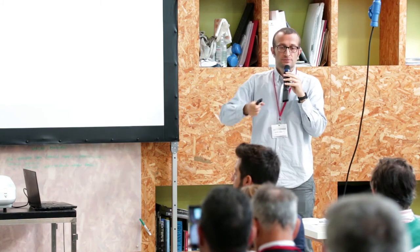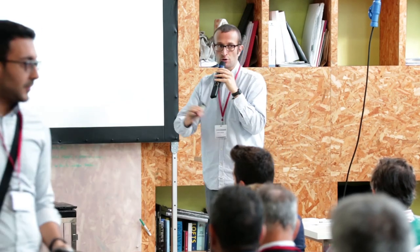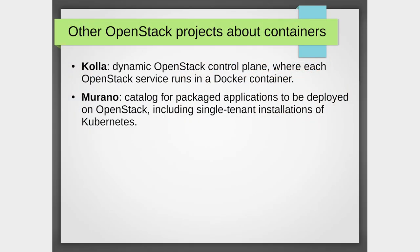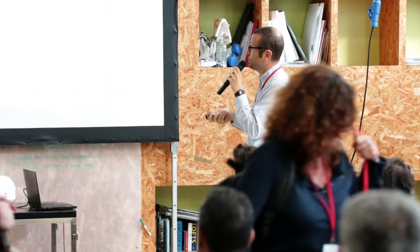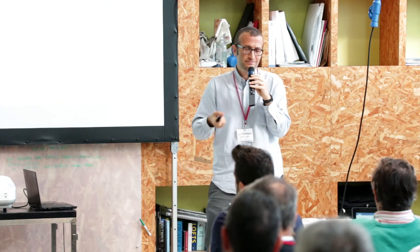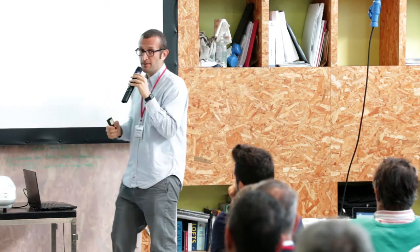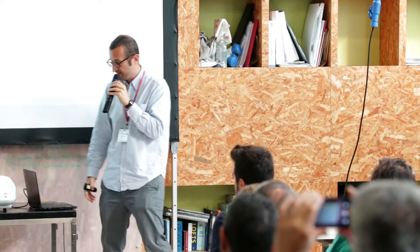There are other projects that deal with containers in OpenStack, though they are out of scope for us. Kolla, for example, allows you to deploy OpenStack so that the control plane is dynamically deployed with each OpenStack service running in a container — that's OpenStack on containers. And Murano is a catalog for packaged applications; among these applications there is Kubernetes as a single-tenant installation, but it's more interesting for other applications.